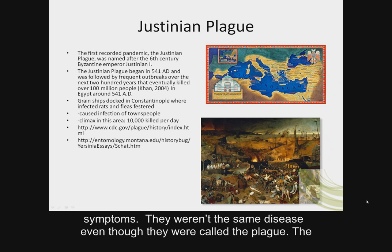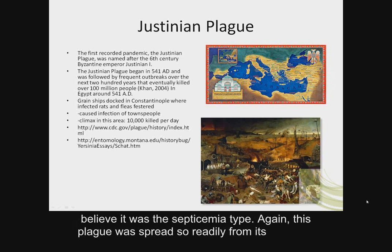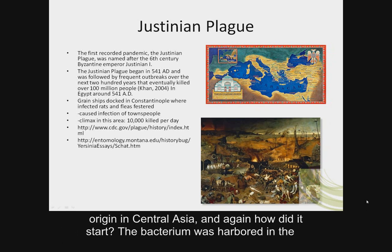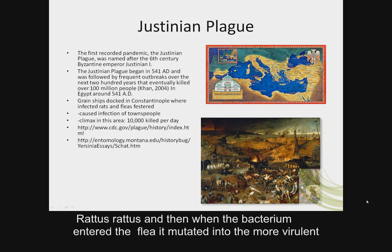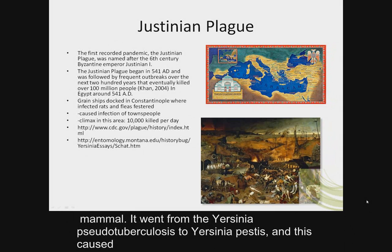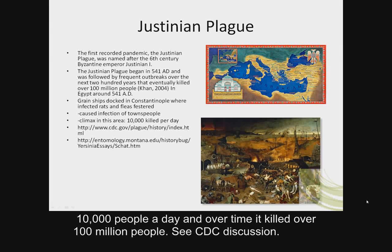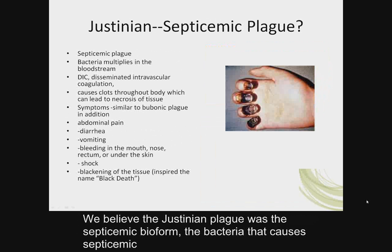The Justinian Plague presented with necrosis of the extremities, notably the hand, so we believe it was the septicemic type. The bacterium that causes septicemic plague multiplies in the bloodstream and can cause disseminated intravascular coagulation — clots throughout the body leading to necrosis of tissue. The symptoms are similar to bubonic plague with swollen lymph nodes, but additionally there was abdominal pain, diarrhea, vomiting, bleeding from the mouth, nose, and rectum, shock, and blackening of the tissues, which inspired the term Black Death.